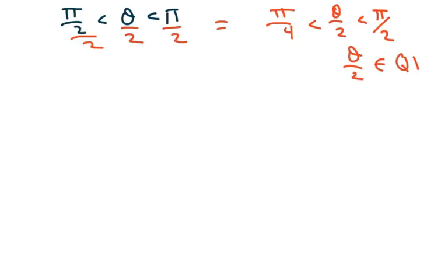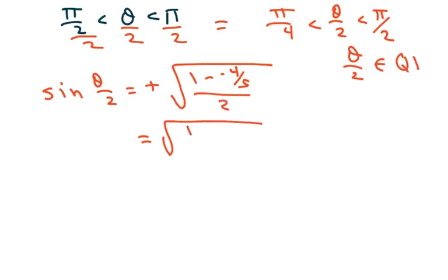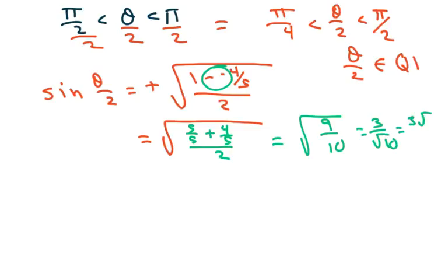Now we're going to do our half angle for sine. In quadrant 1, we use the positive. It's going to be 1 minus negative 4 fifths over 2, which equals the square root of... I'm going to change the 1 to 5 fifths, so 5 fifths plus 2 negatives make a positive, which gives you square root of 9 over 10, which equals 3 over square root of 10, which equals 3 square root of 10 over 10.